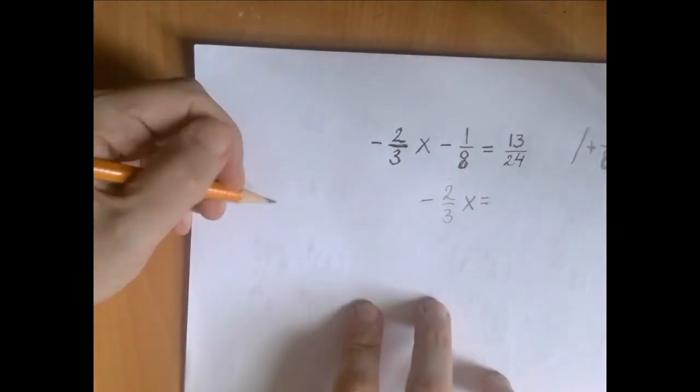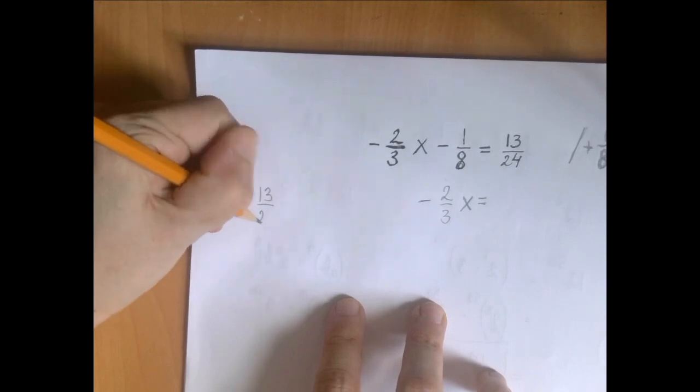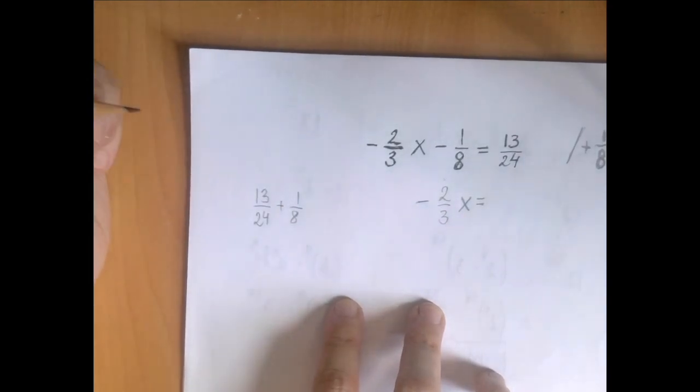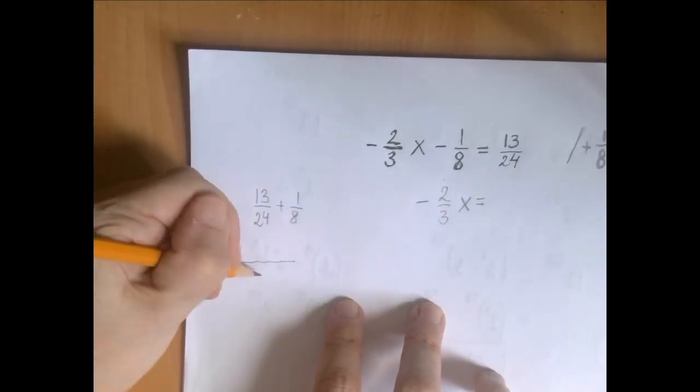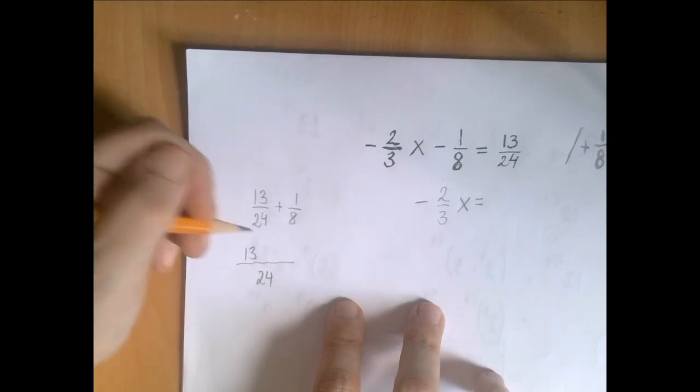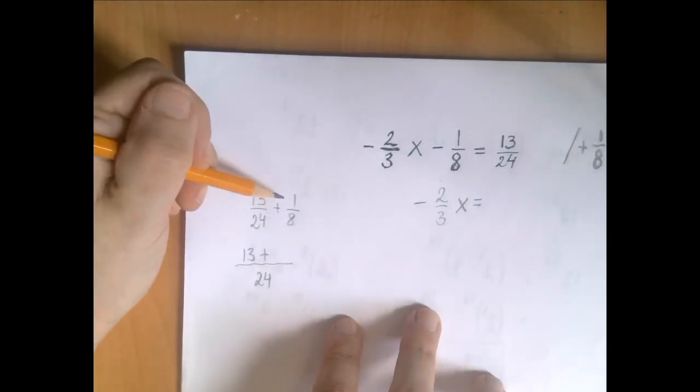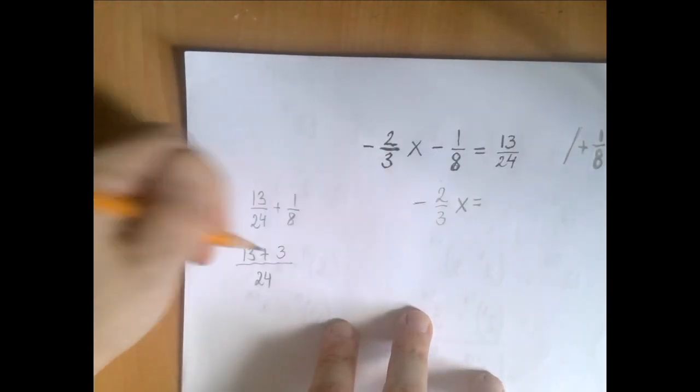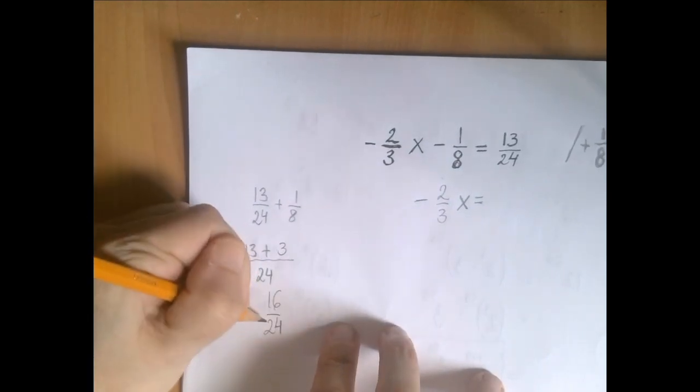On the right hand side we're going to have 13 over 24 plus one eighth. So the common denominator 24 will work. 8 to 24 that was multiplication by 3. 1 times 3 is 3. So what we have is 16 over 24.